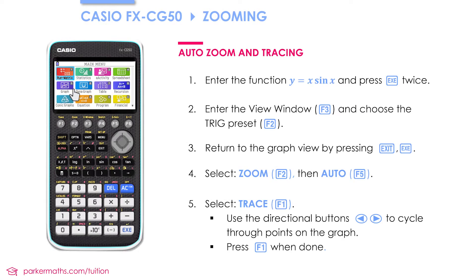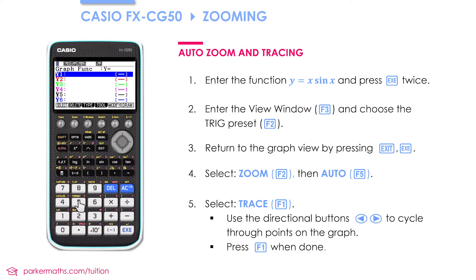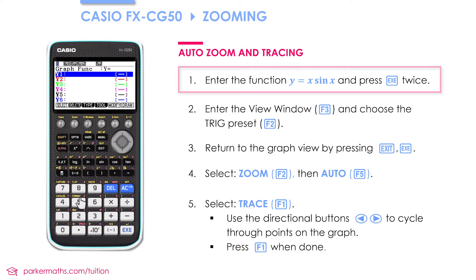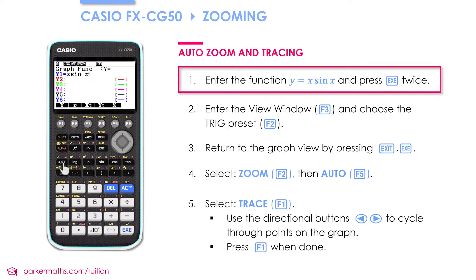First of all we enter graph mode by pressing 5. We're going to enter our function — for this example we're going to use x·sin(x). Don't worry if you don't know what this function looks like; you'll find out in a minute when we plot the graph.